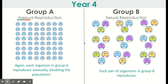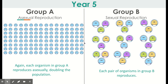In year four, continue to count how many organisms are in each group and see how those numbers are changing, comparing the asexual group to the sexual group. In year five, count how many organisms are in each group. Maybe you can figure out a mathematical way to count these or determine how many offspring will be produced each year.